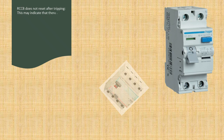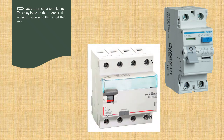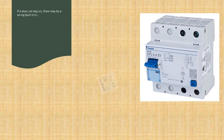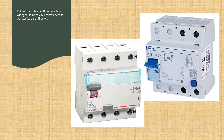RCCB does not reset after tripping. This may indicate that there is still a fault or leakage in the circuit that needs to be cleared before resetting the RCCB. To reset the RCCB, turn off the power and disconnect all appliances from the circuit. Then turn on the power and push the lever of the RCCB to the on position. If it does not stay on, there may be a wiring fault in the circuit that needs to be fixed by a qualified electrician.